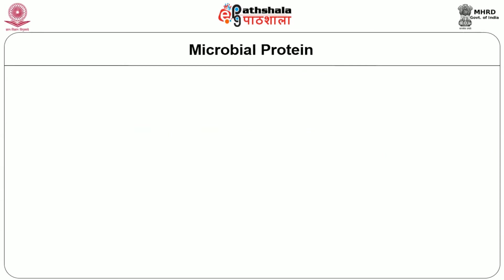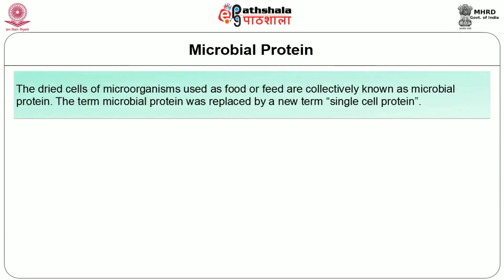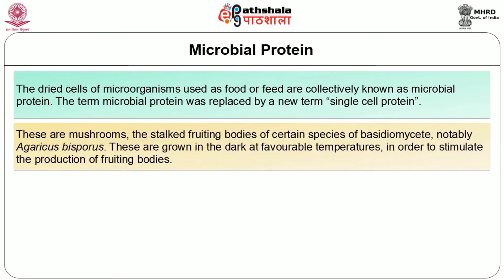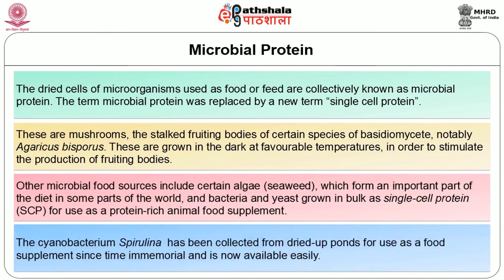The next important microbial product is microbial protein. The dried cells of microorganisms used as food or feed are collectively known as microbial protein. The term microbial protein was replaced by the new term single cell protein. These include mushrooms, the stalked fruiting bodies of certain species of Basidiomycetes, notably Agaricus bisporus, grown in the dark at favorable temperatures to stimulate the production of fruiting bodies. Other microbial food sources include certain algae, that is seaweed, which form an important part of the diet in some parts of the world. Bacteria and yeast grown in bulk as single cell protein are used as a protein-rich animal food supplement.